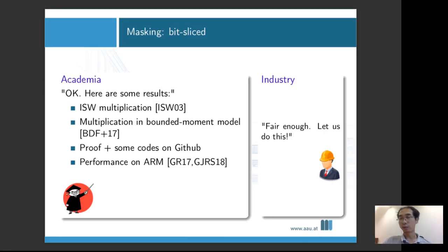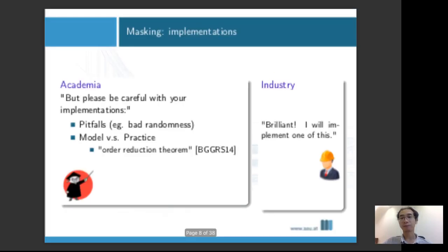From the industry point of view, although you want something that's good in every aspect, we all know that's too good to be true. So our industry engineer simply says, that's fair enough, I'll take it. Then we have several schemes available: ISW multiplication and multiplication in the bounded moment model. Both of them have security proofs. And in the last few years, a lot of researchers have been publishing their code on GitHub. We also have performance evaluation on ARM processors.